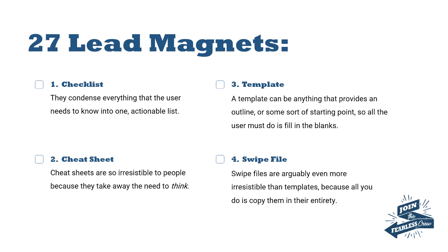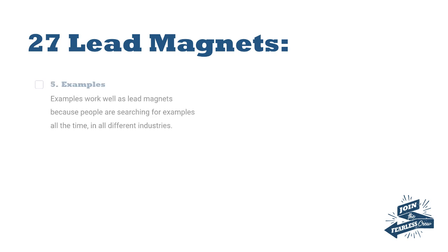Common swipe files include things like sales letters or email sequences. Somebody could just cut and paste it, tweak maybe one or two simple bits like links, prices, or a couple of descriptions, and away they go straight away. Number five is examples — these work well because people are searching for examples all the time across all different industries.